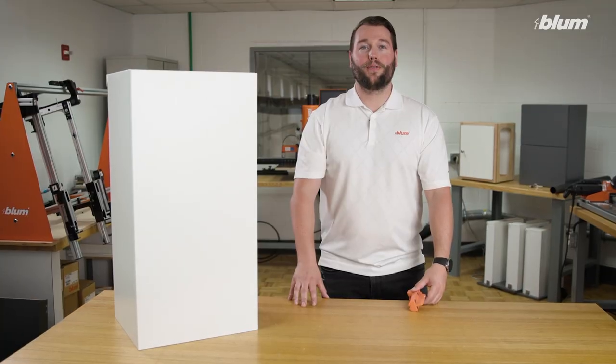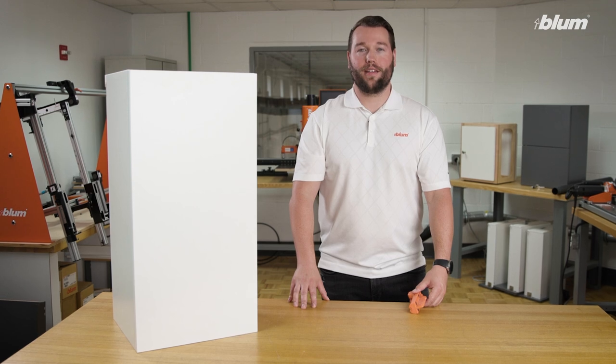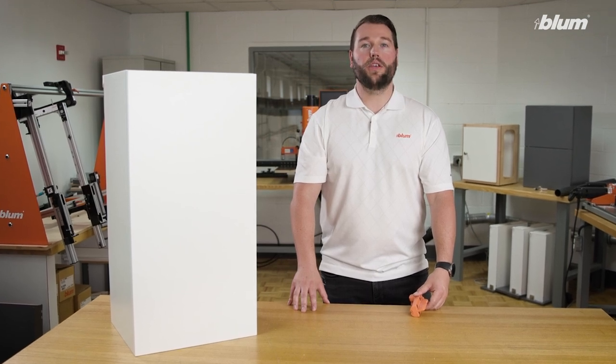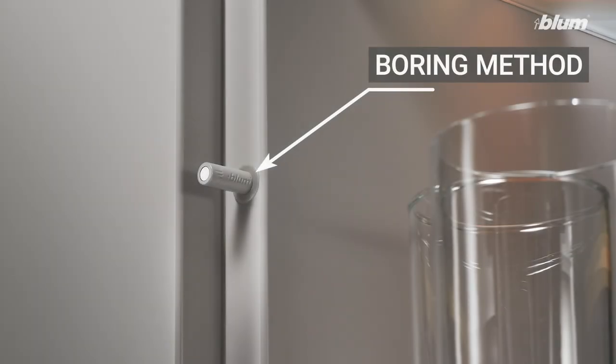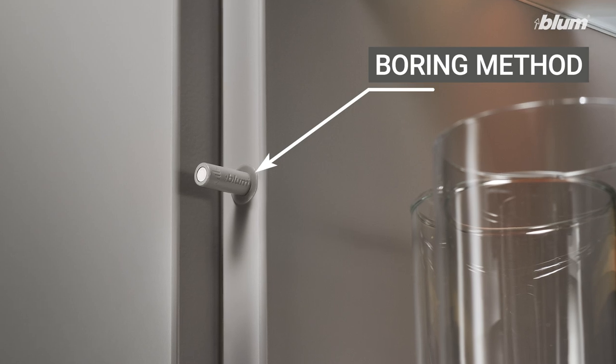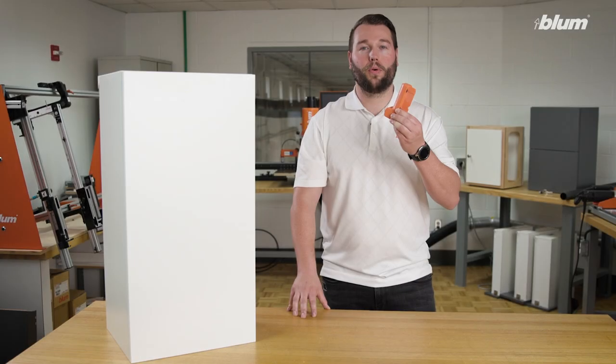There are two methods for installing Tip-On units into your cabinet, either by boring into the side panel or by using an adapter plate. We'll first demonstrate the boring method using our Blum-Motion and Tip-On for doors boring template.